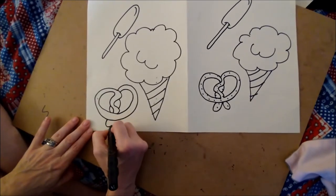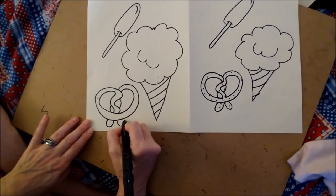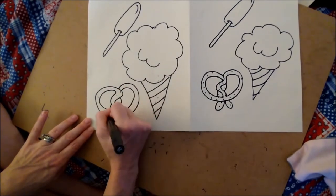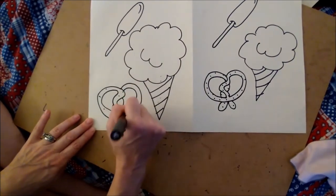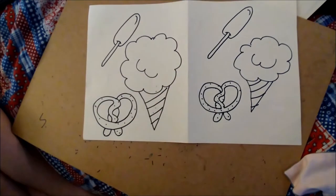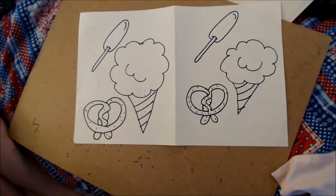And then you just put the end of the pretzel line there, the end of the pretzel line there, and give yourself some pretzel salt. Not too much though because too much salt is not good for you. And there's our yummy amusement park food.